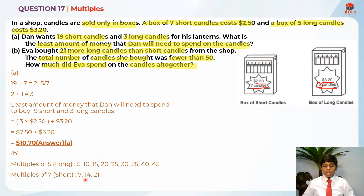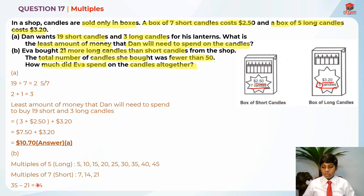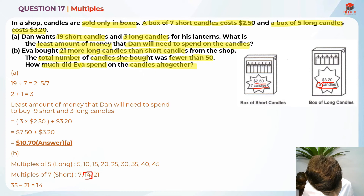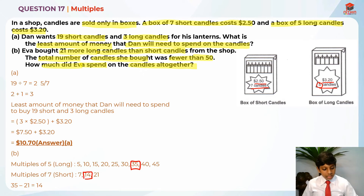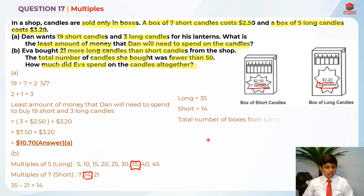Now let's try short = 14. We need a multiple of 5 that is more than 21: 25 minus 14 is not 21, 30 minus 14 is not 21, but 35 minus 14 gives us 21. So the long candles = 35 and the short candles = 14. We can verify: 35 minus 14 equals 21, which matches. The total number of boxes for long candles is 35 divided by 5, which is 7 boxes.